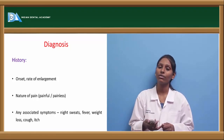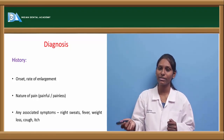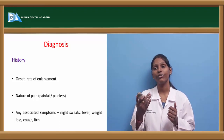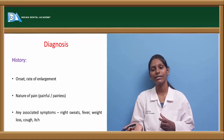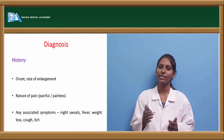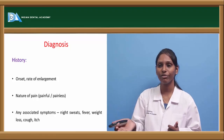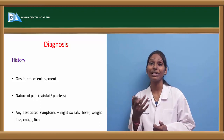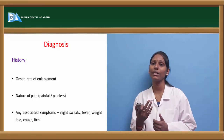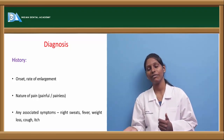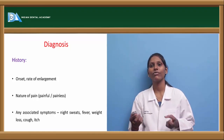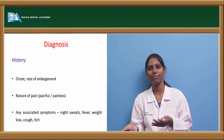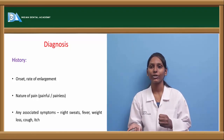Next, any associated symptoms: in case of lymphomas we can see night sweats, associated temperature rise, and weight loss. In case of tuberculosis there will be fever and productive cough. Itching, especially neck itching, can be seen in asthma associated with lymphadenopathy. These pathognomonic associated symptoms will allow us to come to a diagnosis.